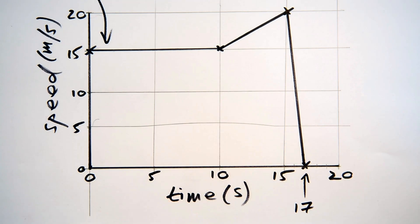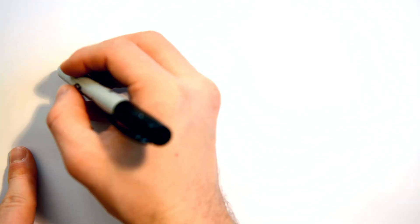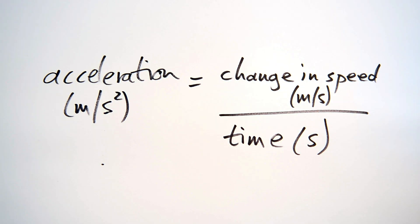So, what can we now do with this graph then? Well, kind of like the distance time graphs, we can calculate the gradients at different points. But we aren't calculating speed this time, but rather acceleration. Acceleration equals change in speed divided by time, or change in speed over time.